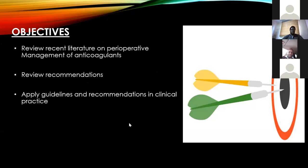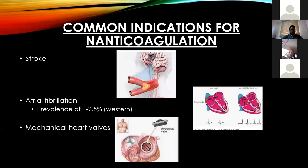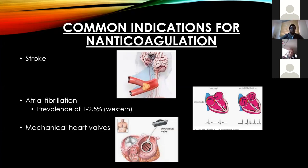The objectives of the day are to review the recent literature on perioperative management of anticoagulants, review the current recommendations from the recommending bodies, and apply the guidelines in our clinical practice. The common indications of anticoagulation — and this list is not exhaustive — include stroke, atrial fibrillation (whose prevalence from Western data is 1 to 2.5%), and the third commonest indication, mechanical heart valve.